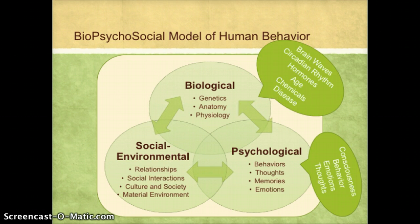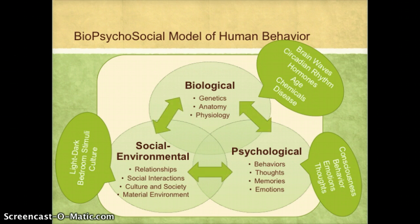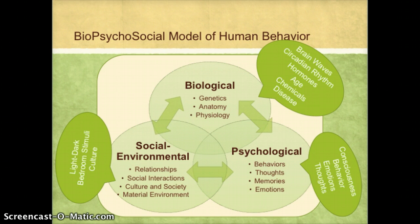The biological factors we will be looking at are brain waves, the circadian rhythm, hormones, age, chemicals such as drugs, and disease. And lastly, the social and environmental factors we will look at are signals of light and dark from the environment, stimuli in the bedroom, and culture.